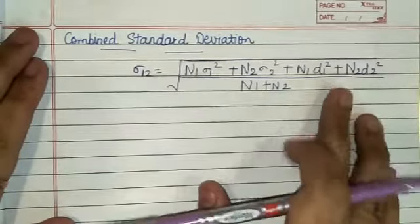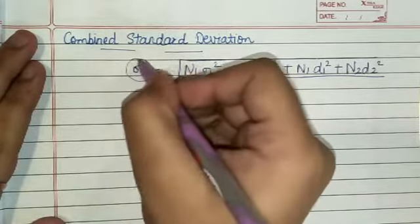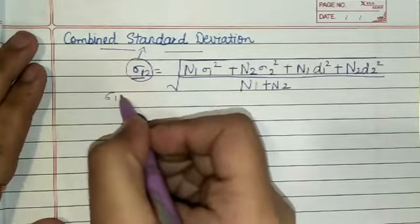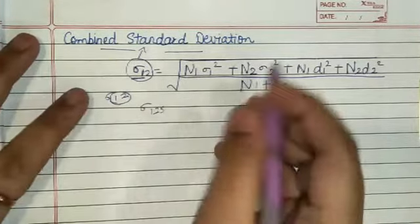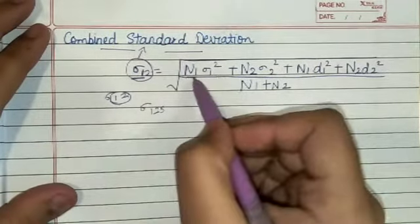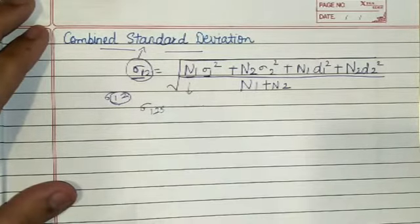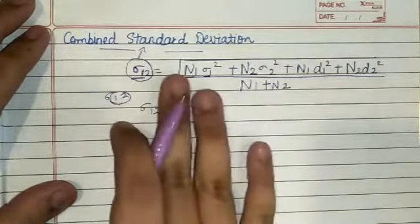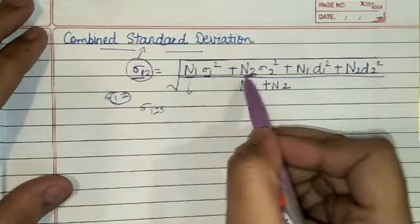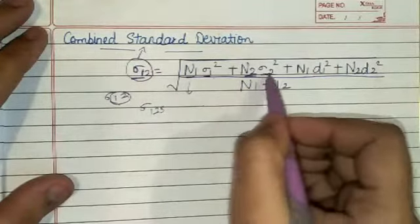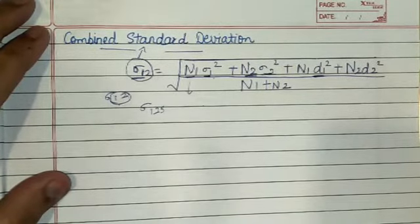We will start with combined standard deviation. This formula gives the combined standard deviation of two groups. Here n1 is the number of terms in the first group, and n2 is the number of terms in the second group. σ1 is the standard deviation of the first group and σ2 is the standard deviation of the second group.